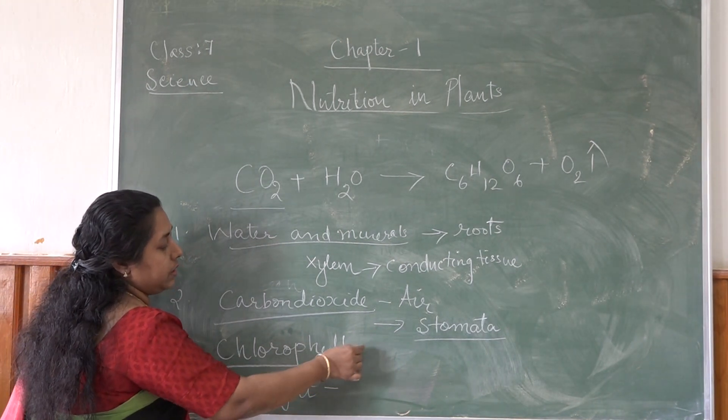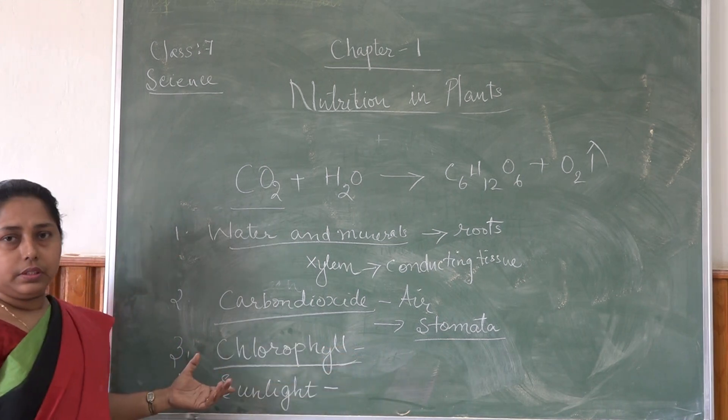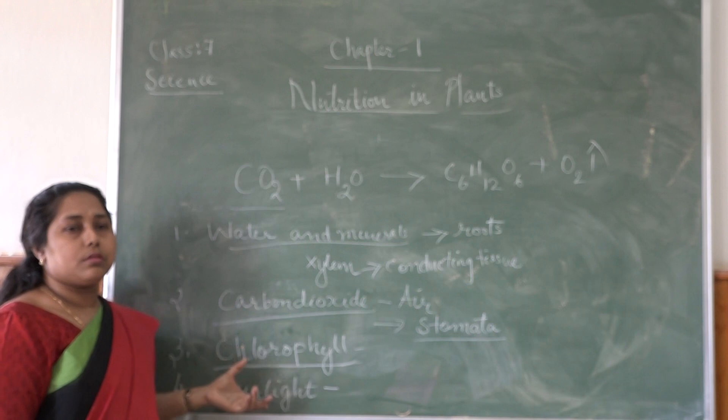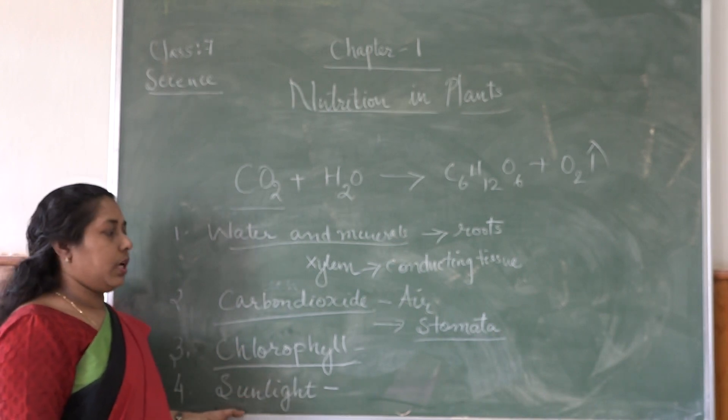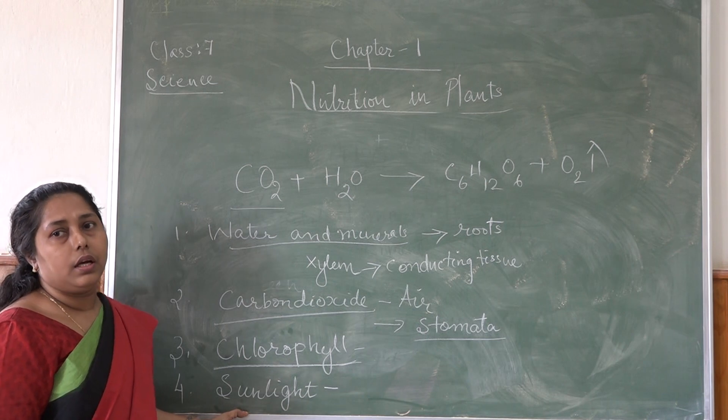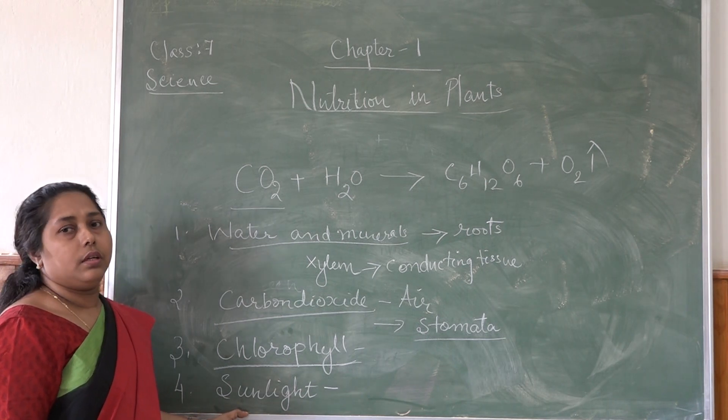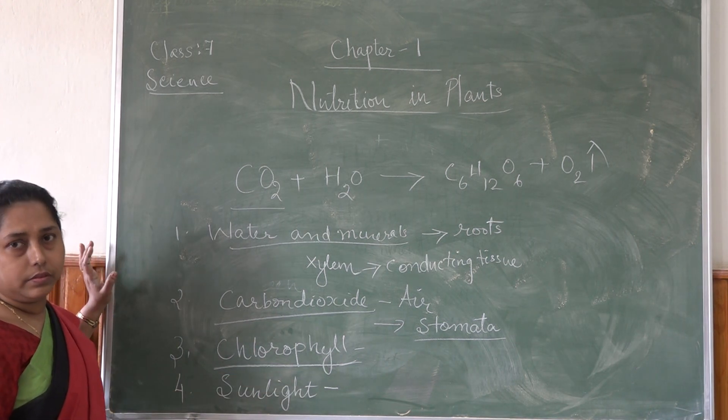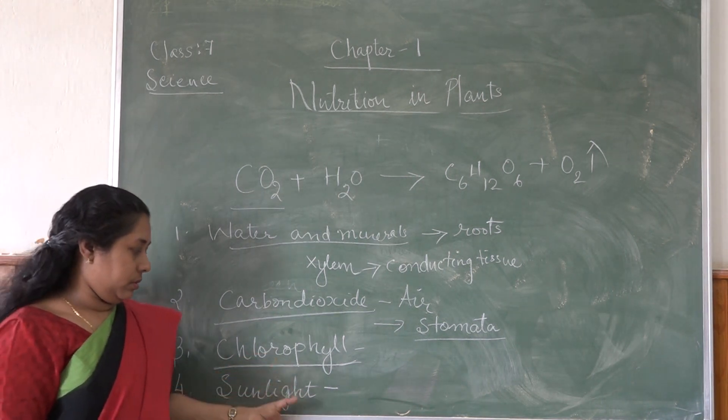Chlorophyll is present in the green parts of the plants, especially leaves. There are some plants which have multi-colored or variegated leaves. They can also conduct photosynthesis because some parts of chlorophyll is present in that. Some green parts are also there.